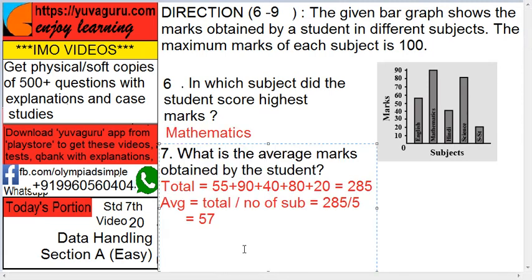Next, what is the average marks obtained by the student? These are the total marks. Average means total upon number of subjects. What is the total? English is 55.